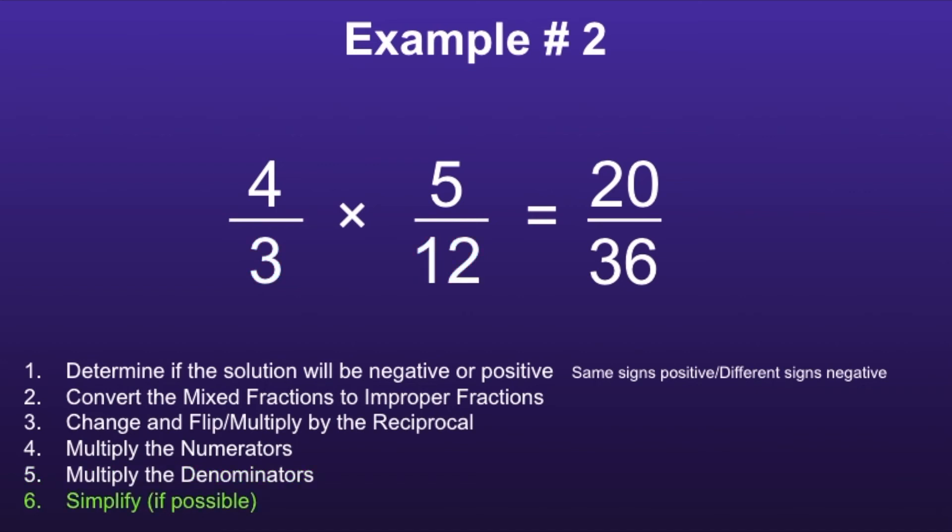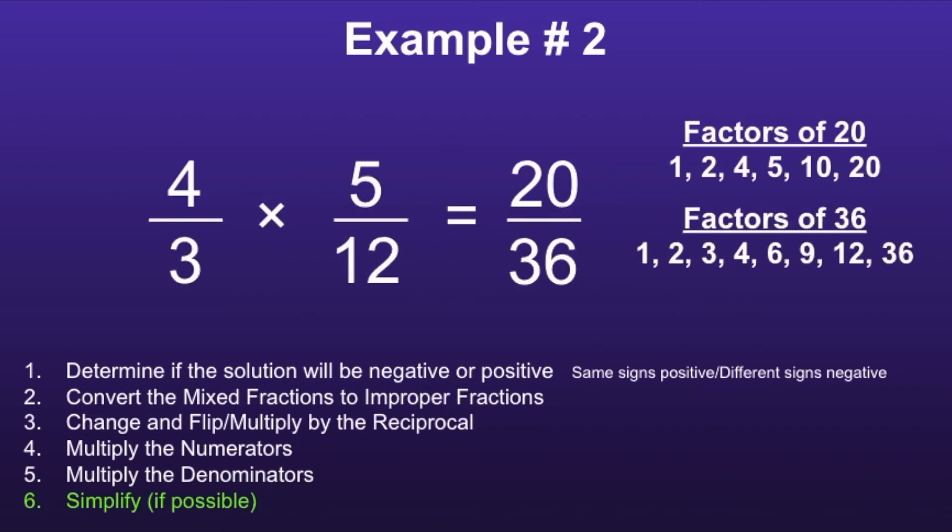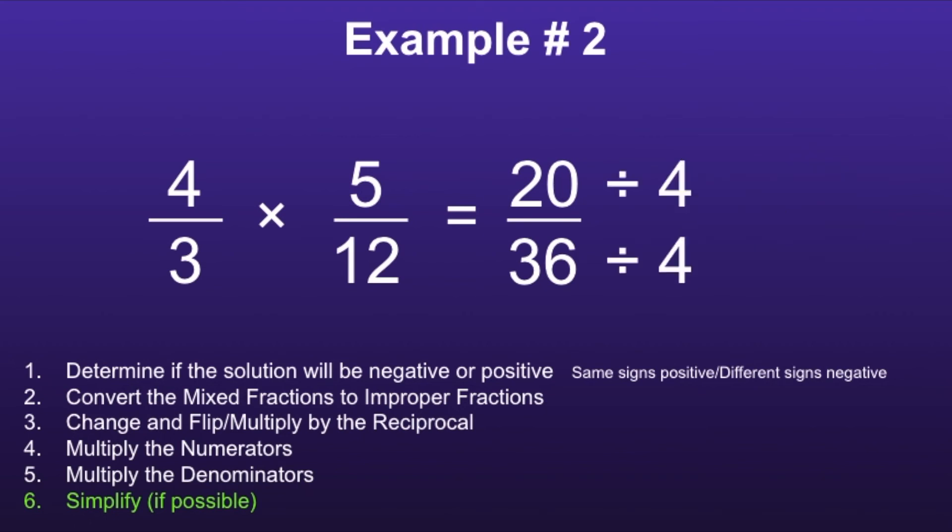And finally, step six: simplify if possible. In order to determine what we can simplify by, we want to write down the factors of both twenty and thirty-six. When we write down these factors, we can determine that the greatest common factor is going to be four. So I can divide both the twenty and the thirty-six by four. Twenty divided by four is five, and thirty-six divided by four is nine.